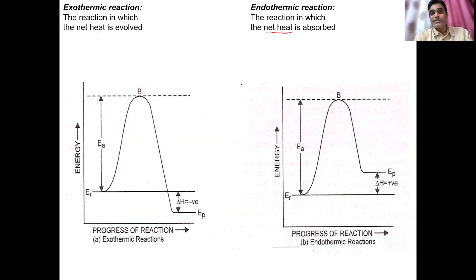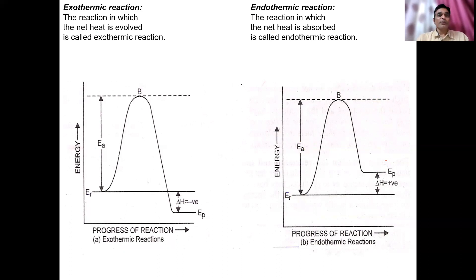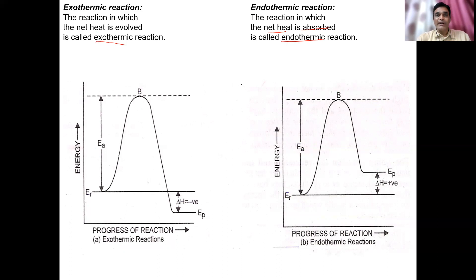For endothermic reactions: the activation energy absorbed from outside plus the energy of the reactant together reach the threshold. After the reaction, the energy released — which is the energy of the product — is less than what was absorbed. So net heat is absorbed. Therefore: the reaction in which net heat is absorbed is called an endothermic reaction. For exothermic, delta H is negative; for endothermic, delta H is positive.